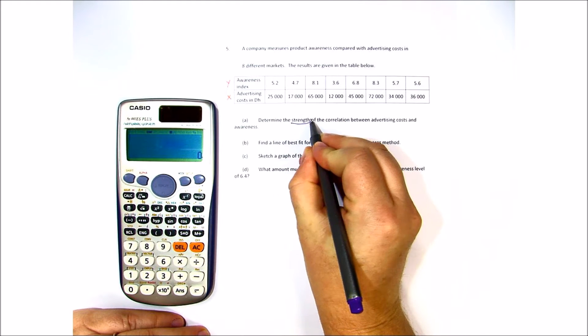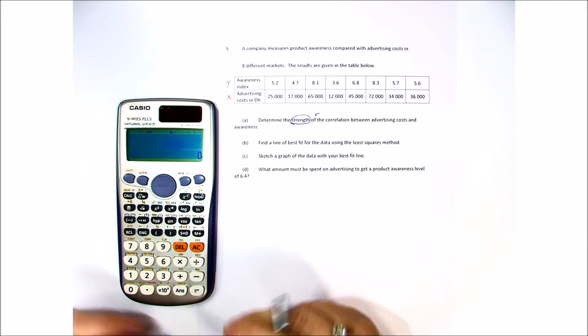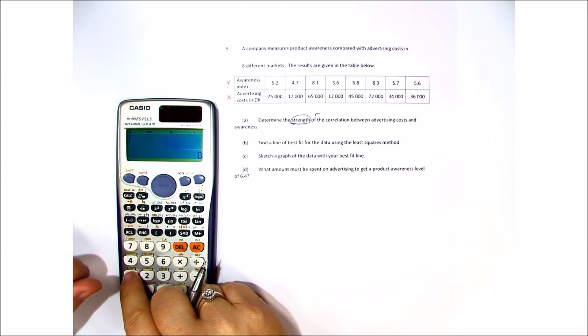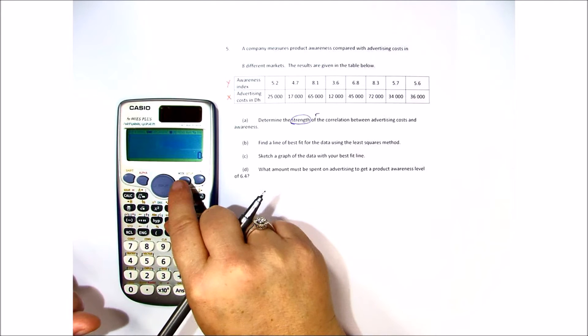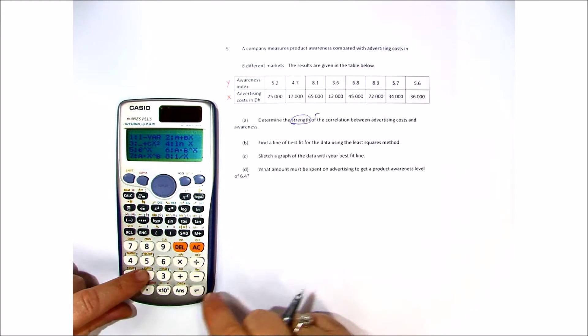Now when it talks about the strength of the correlation, it's asking you to find R. So we're going to have to put in some data. And to do this, we're going to go to mode stat and choose A plus BX.